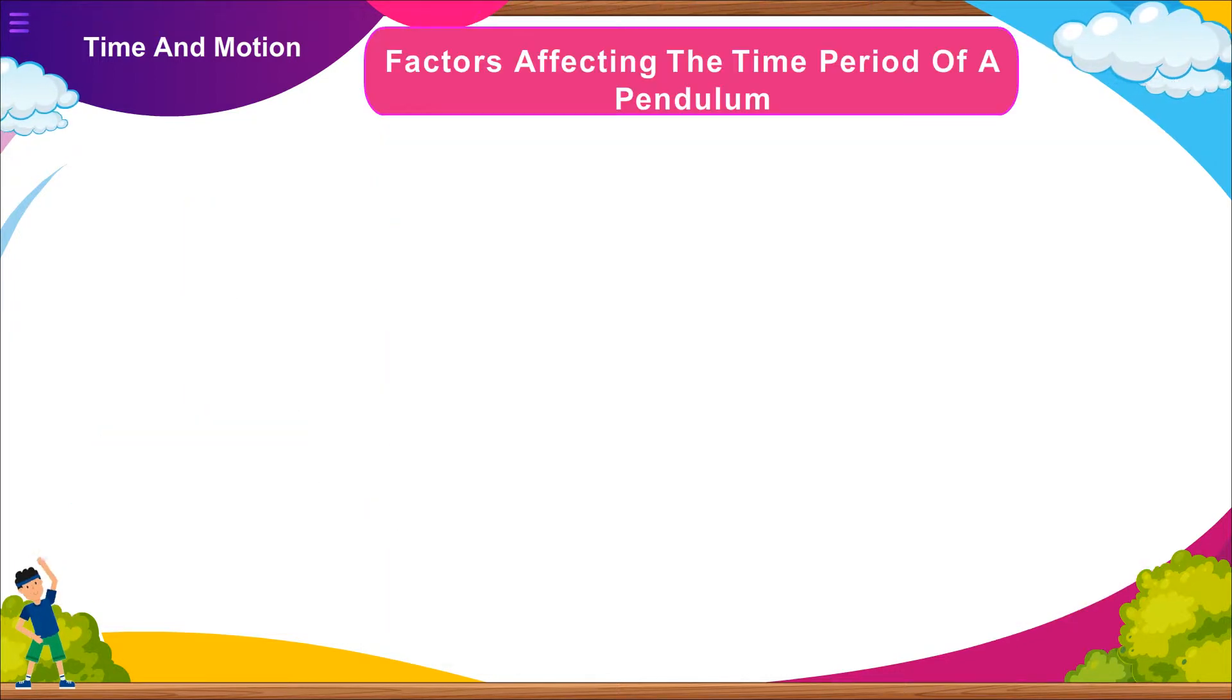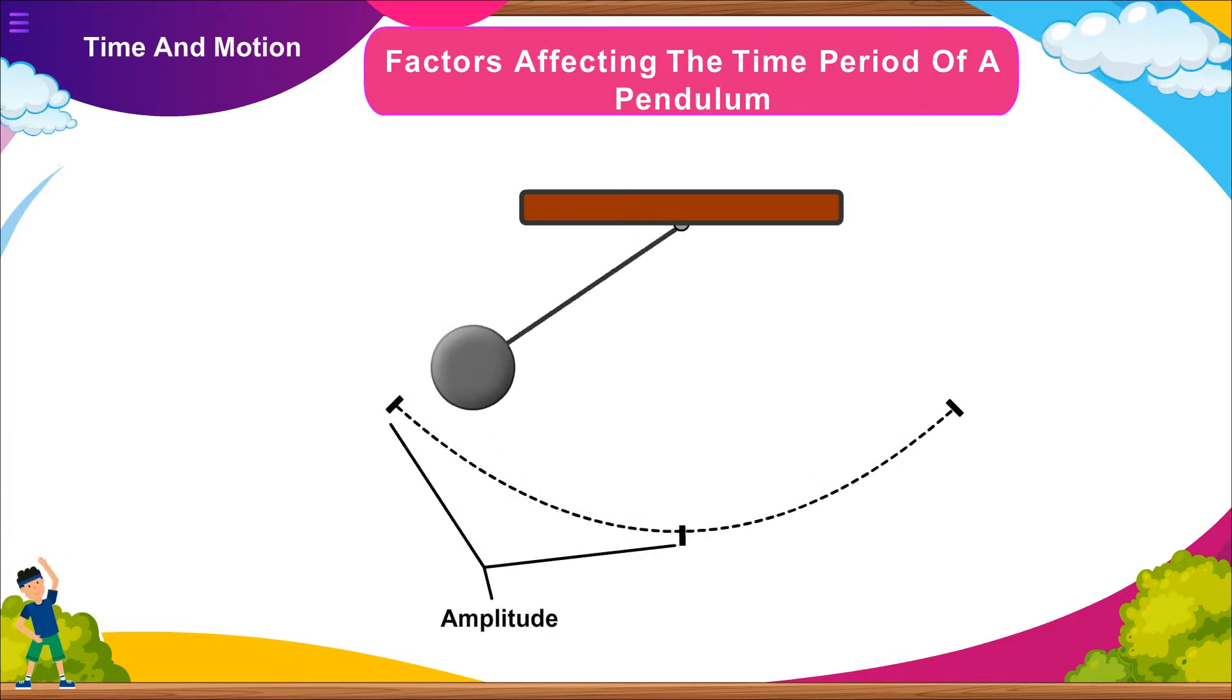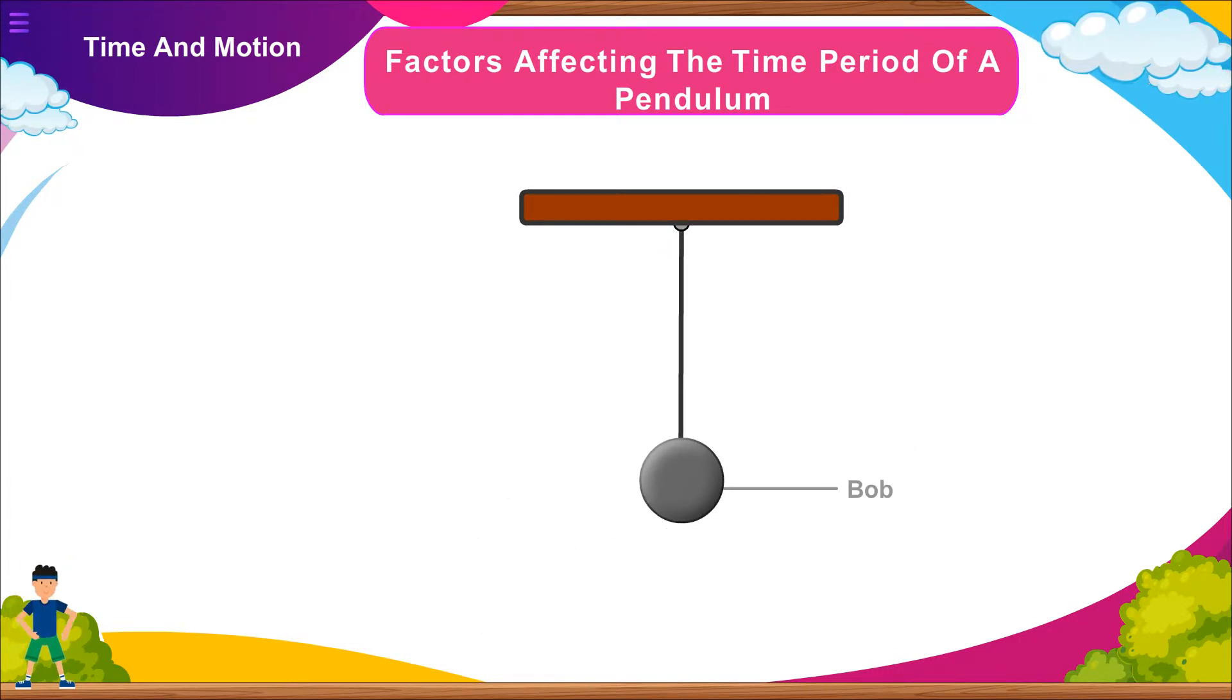Factors affecting the time period of a pendulum: Time period does not depend on amplitude. Time period does not depend on the mass of the bob. Time period depends on the length of the string.